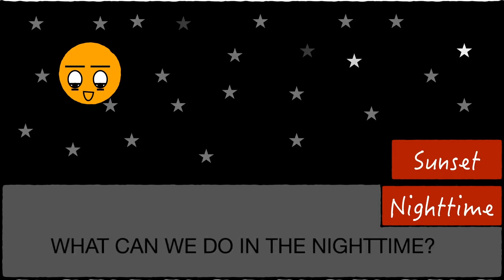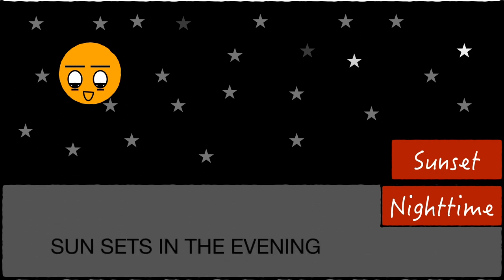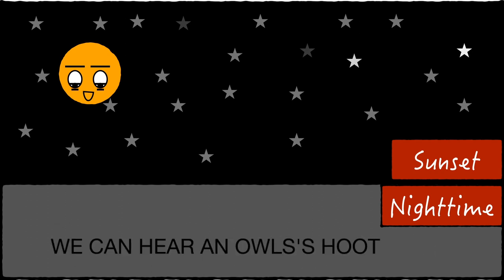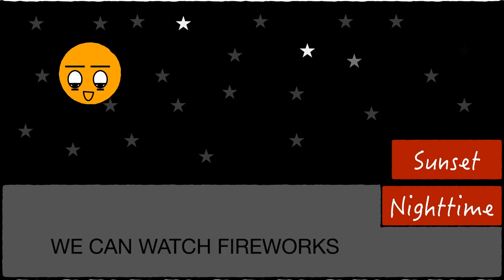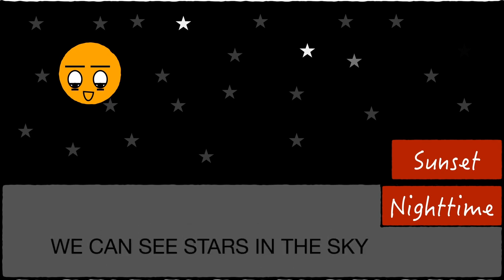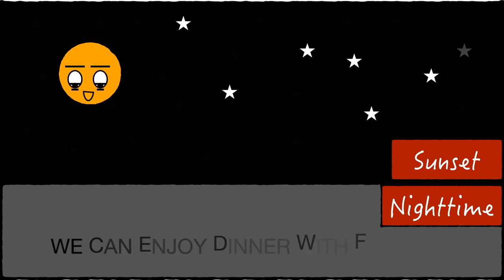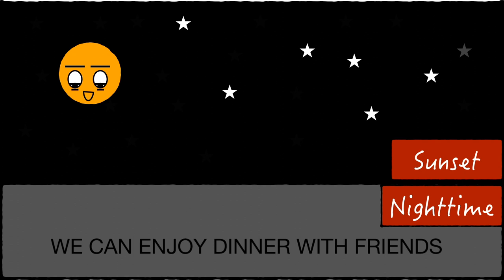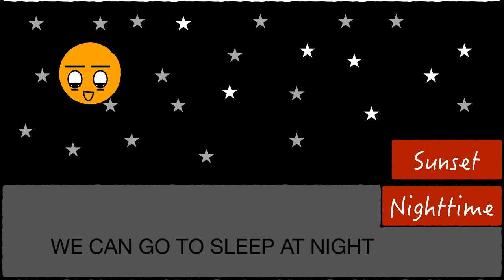What can we do in the nighttime? The sun sets in the evening. We can hear an owl's hoot, we can watch fireworks, we can see stars in the sky, we can enjoy dinner with friends, and we can go to sleep at night.